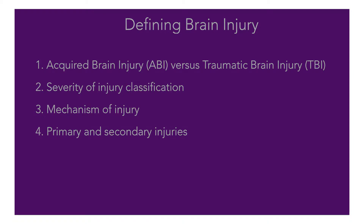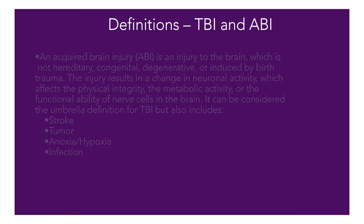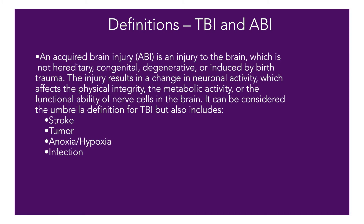So let's start with a basic definition before getting too far. Broadly, the term acquired brain injury is described as an injury to the brain that is not hereditary, congenital, degenerative, or induced by birth trauma. The injury results in some sort of change in neuronal activity, which affects the physical integrity or the metabolic activity, or the functional ability of nerve cells in the brain.